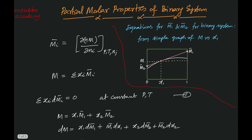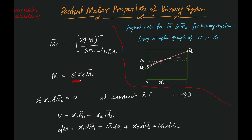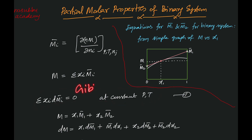To start with, we know the definition of m̄ᵢ, which is ∂(nM)/∂nᵢ at constant P, T, and nⱼ where j ≠ i. We have two equations from solution thermodynamics: the definition of M, which equals Σxᵢm̄ᵢ, and the Gibbs-Duhem equation at constant P and T, given as Σxᵢ dm̄ᵢ = 0.